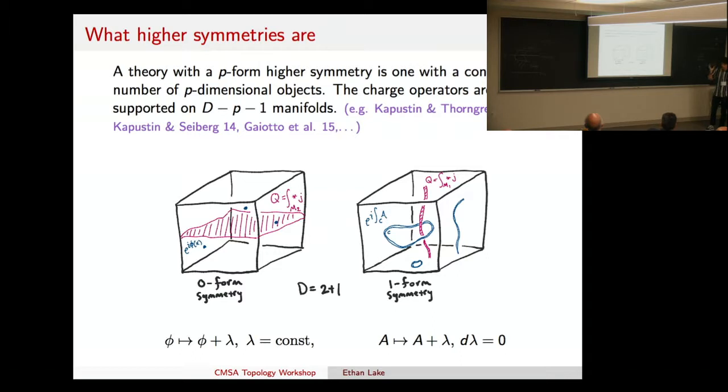So if I had some fields in mind, a prototypical thing that a regular symmetry would do is it would shift this field by a constant, for example. And a prototypical thing that a one-form symmetry could do is if I have a gauge theory in mind, it would take a gauge field and shift it by a flat connection.